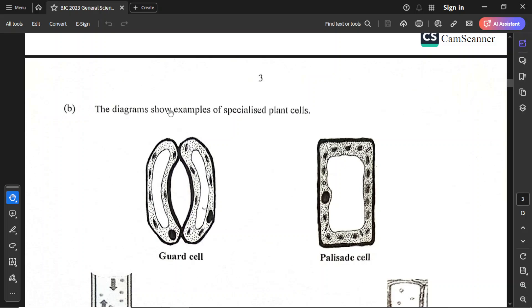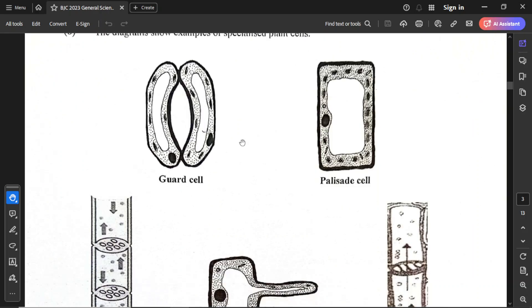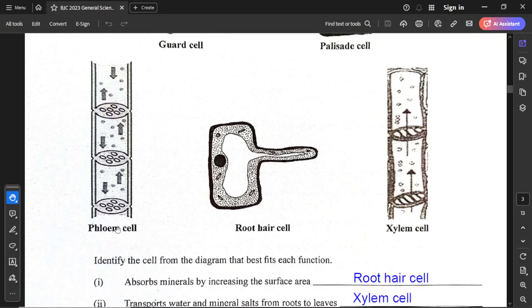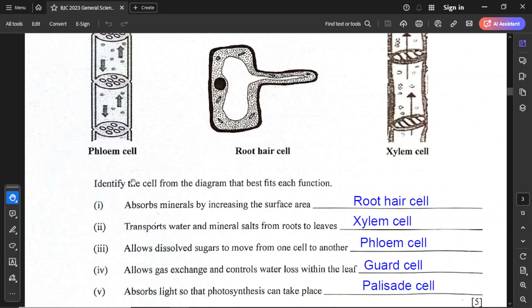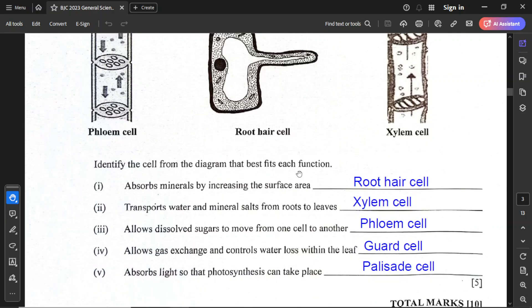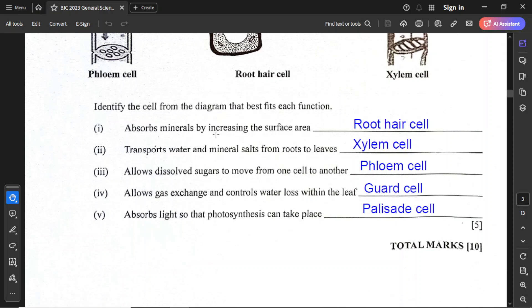For part B, the diagrams show examples of specialized plant cells. We have guard cell, palisade cell, phloem, root hair cell, and xylem. This part asks us to identify the cell from the diagram that best fits each function. For one, it absorbs minerals by increasing the surface area, and that is the root hair cell. Transport water and mineral salts from roots to leaves, that is the xylem vessel. For part 3, it allows dissolved sugars to move from one cell to another. The dissolved sugar is actually sucrose, and so this is phloem. For part 4, it allows gas exchange and controls water loss within the leaf, and that is guard cell. The last one is to absorb light so that photosynthesis can take place, and that is the palisade cell.